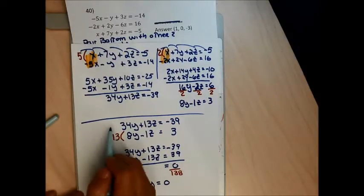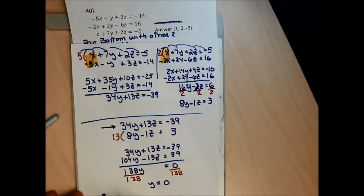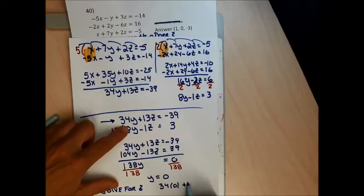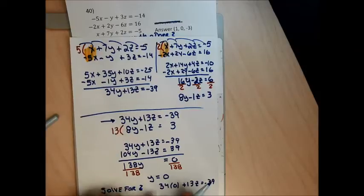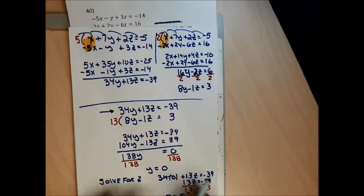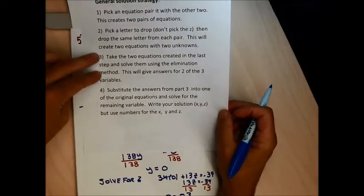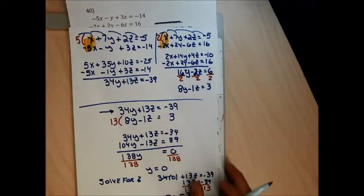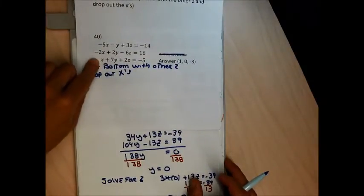Any fraction with zero in the numerator equals zero — that's not a no-solution situation because the letter y didn't drop out, just the number. Now solving for z using the equation 8y minus z equals 3: plugging y equals 0 gives 13z equals negative 39, so dividing by 13 gives z equals negative 3. Done with step three — y equals 0, z equals negative 3.